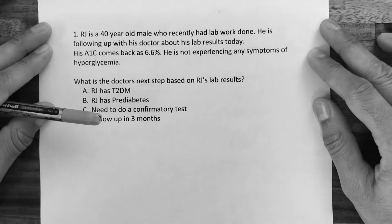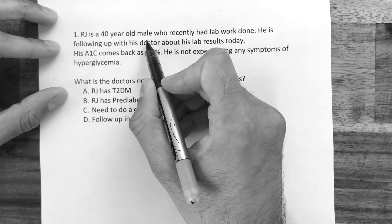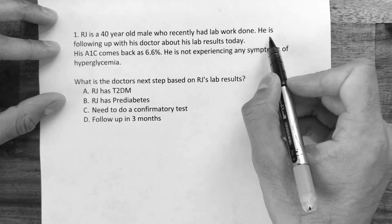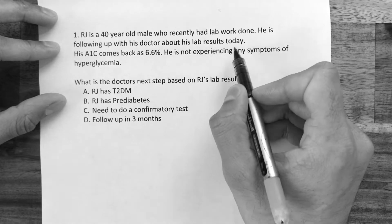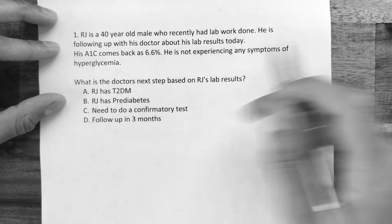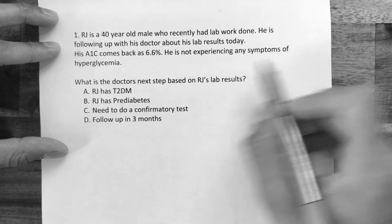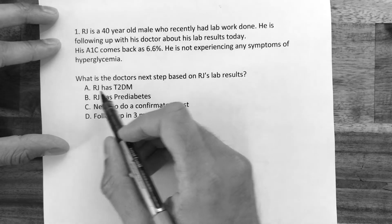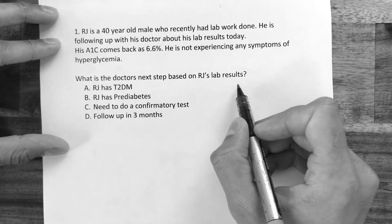Question number one. RJ is a 40-year-old male who recently had lab work done. He is following up with his doctor about his lab results today. His A1c comes back at 6.6%. He is currently not experiencing any symptoms of hyperglycemia. What is the doctor's next step based on RJ's lab results?